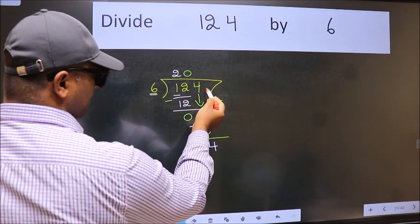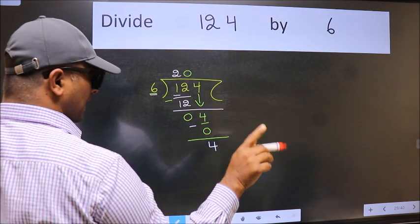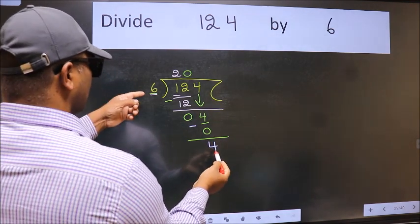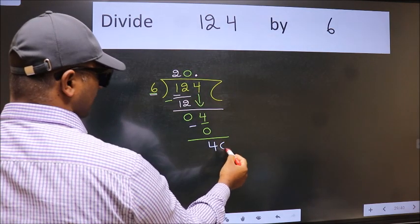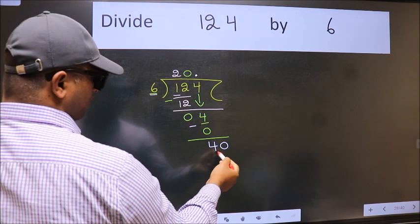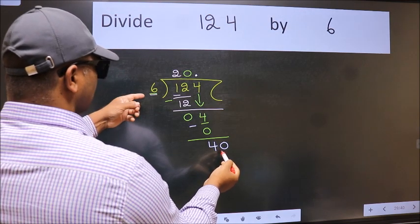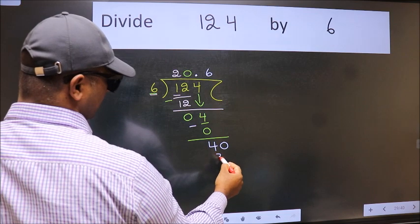Over here, we did not bring any number down. And 4 is smaller than 6. So now we can put dot and take 0. So 40. A number close to 40 in 6 table is 6 times 6, 36.